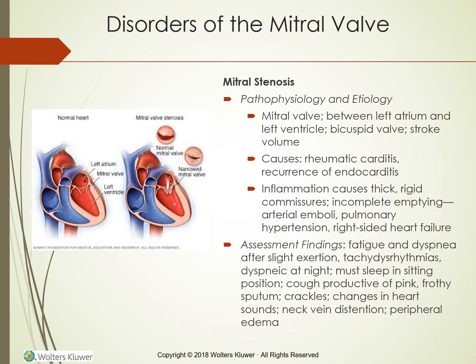Disorders of the mitral valve: the mitral valve lies between the left atrium and left ventricle and is a bicuspid valve. The two cusps are attached on the ventricular surface to chordae tendineae, projections from papillary muscles that contract in unison with the ventricle to prevent the cusps from ballooning into the left atrium. The mitral valve opens widely to allow oxygenated blood to fill the left ventricle and closes tightly to prevent backflow. The valve may become stenotic (narrowed), incompetent (inadequate closure), or prolapsed (floppy). Mitral valve prolapse is the most commonly diagnosed valve disorder.